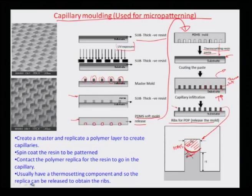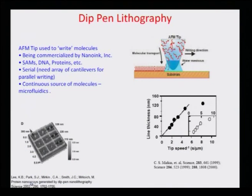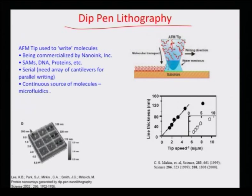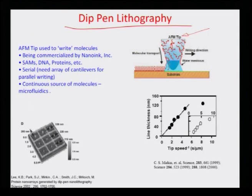That is capillary molding used for micro patterning — one very interesting soft lithography example. Another very important technique used nowadays is dip pen lithography, another process for writing molecules. It was developed by Chad Mirkin's group at Northwestern, who used the tip of an AFM to write molecules. The process involves creating an ideal condition of humidity and temperature so that a thin film of water forms around the AFM tip.